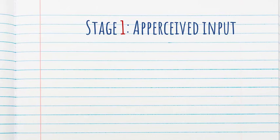The first one is apperceived input. This is where the learner is noticing something in the input, something to be learned. The author describes it as the light of recognition goes on.